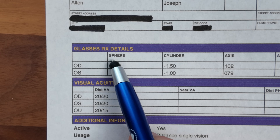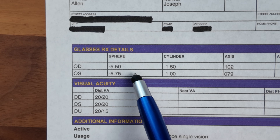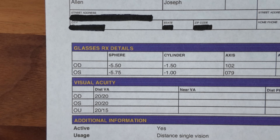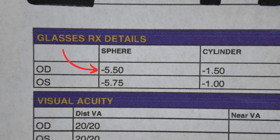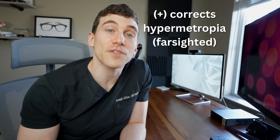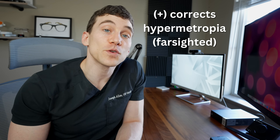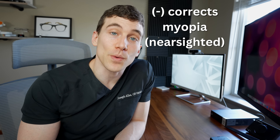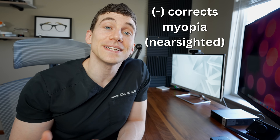The next column over is for the sphere powers. A sphere lens is the most basic, simple type of eyeglasses lens that can be made. Below that, you'll see power numbers that range anywhere from zero, going up or down in quarter-diopter steps. In front of those numbers, you should see either a minus sign or a plus sign, and those signs are really important. A plus sign means the lens has to be made with a magnifying power to correct for farsightedness or hypermetropia. A minus sign, like you see on my prescription, means it corrects for myopia or nearsightedness.